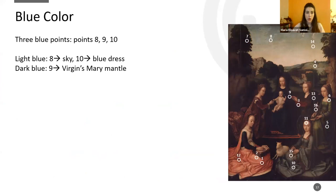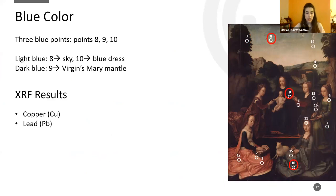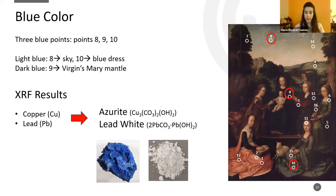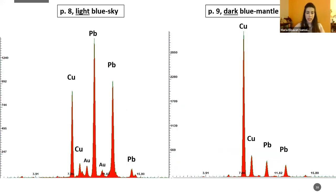For the blue color, we took three points with different tonalities. The XRF showed again copper and lead, so for the blue we have azurite and lead white. Here we can see the XRF spectra showing the copper and lead for both light and dark tonalities.